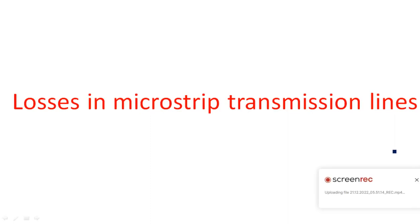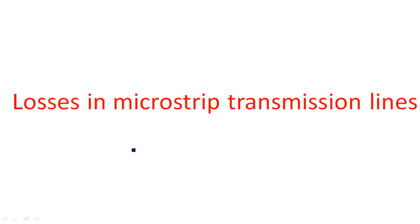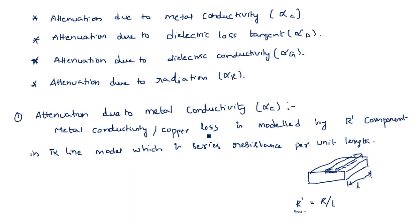In this video, we discuss two more attenuation losses in microstrip transmission lines. The first two losses—attenuation due to metal conductivity and attenuation due to dielectric loss tangent—were discussed in the previous video. Now we cover the third and fourth attenuation mechanisms.